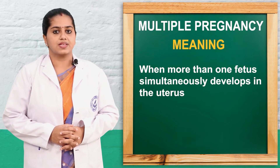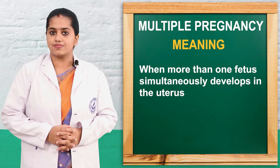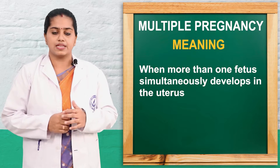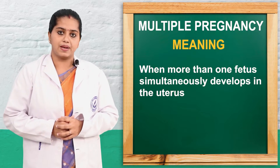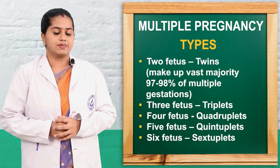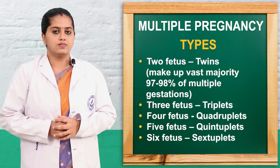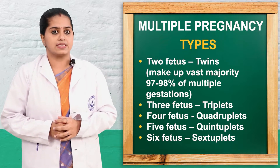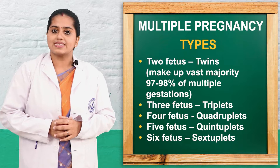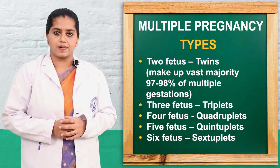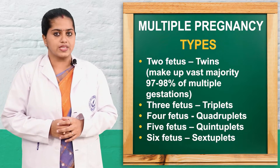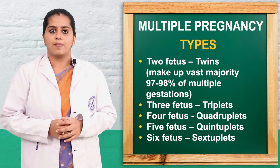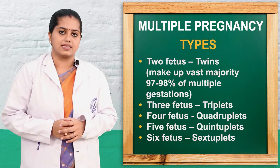Normally in the pregnant uterus one fetus will be present. If more than one fetus is present in the uterus, then it is known as multiple pregnancy. Different types are there: 2 fetuses is known as twins, 3 as triplets, 4 as quadruplets, 5 as quintuplets, 6 as sextuplets. The commonest type we can see is twins pregnancy.